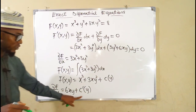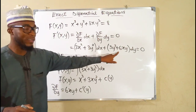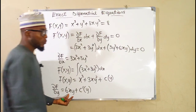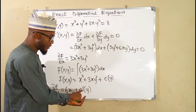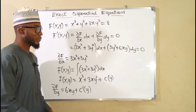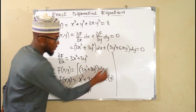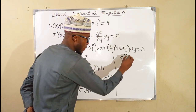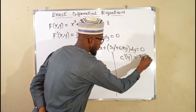This result must equal N exactly. We have 6xy here from differentiating f, and we equally have 6xy in N. This means c prime of y must equal the remaining term, which is 3y squared. So we set c prime of y equal to 3y squared.